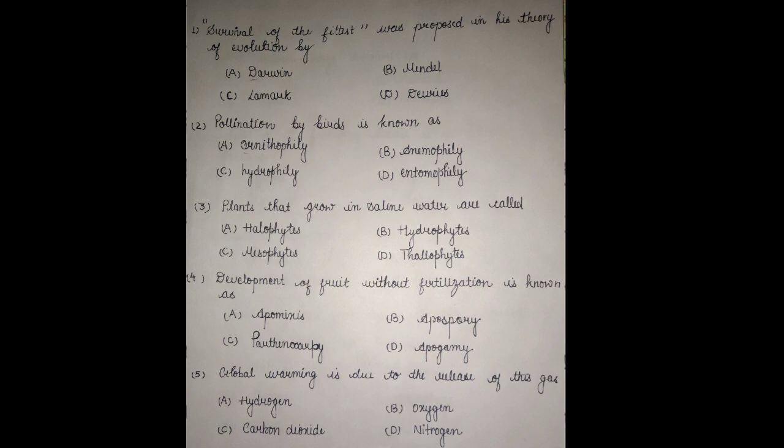The fourth question: development of fruits without fertilization is known as — Option A: apomixis, Option B: apospory, Option C: parthenocarpy, and Option D: apogamy. The answer is parthenocarpy — the development of fruit without fertilization.